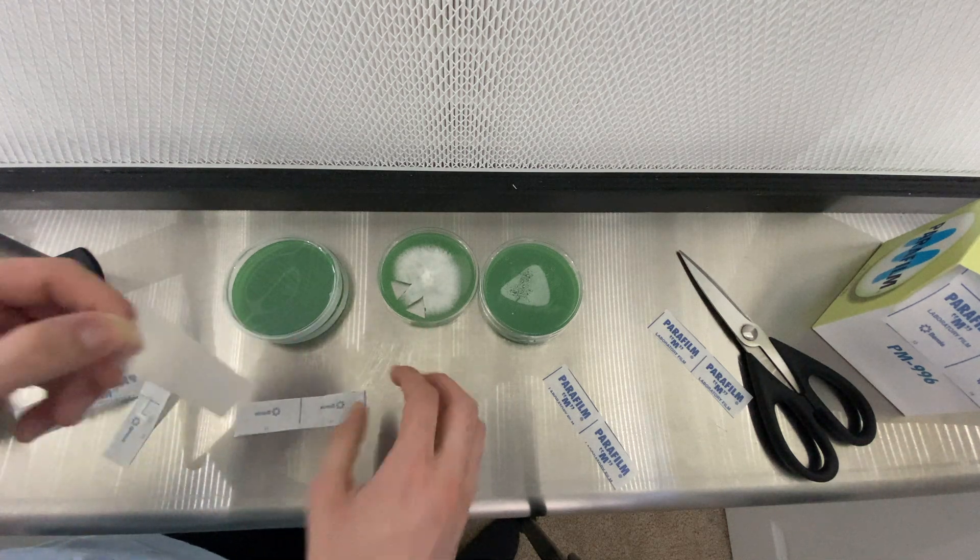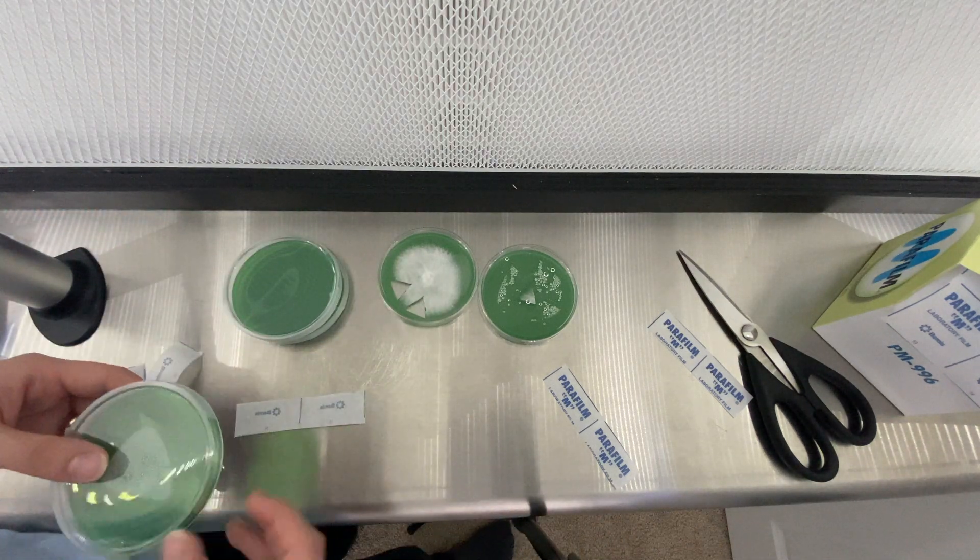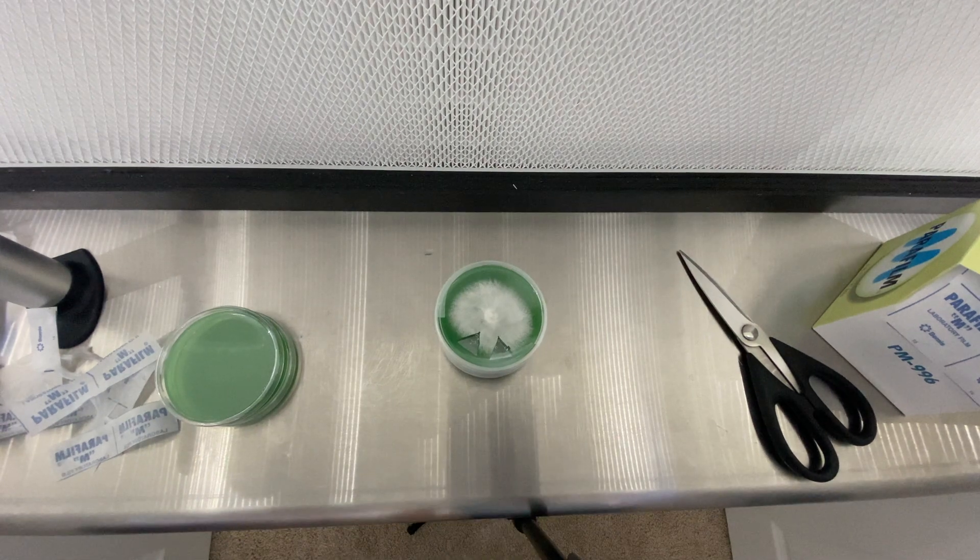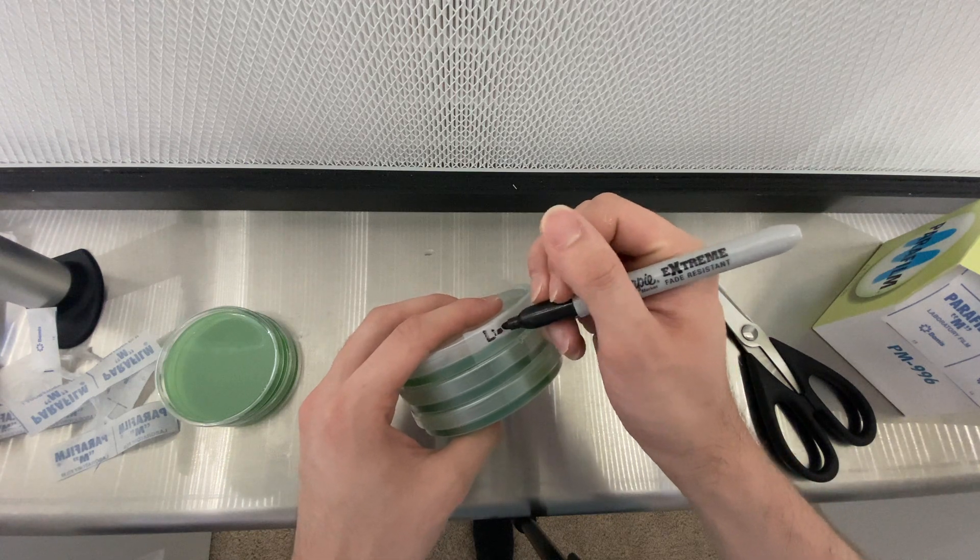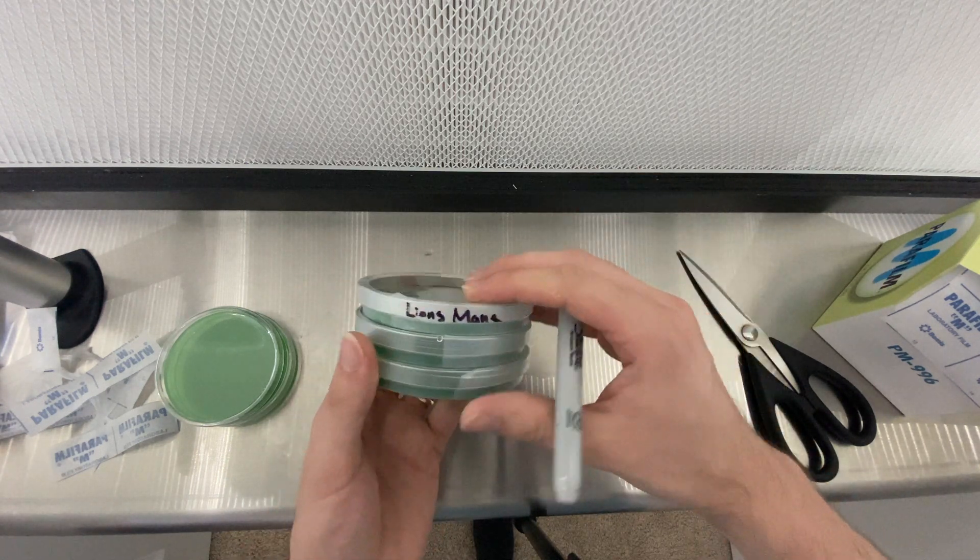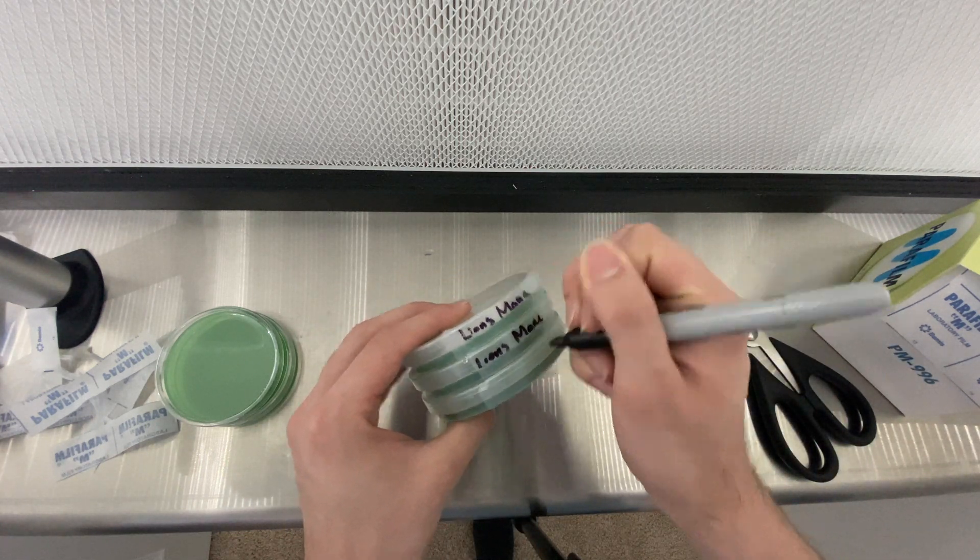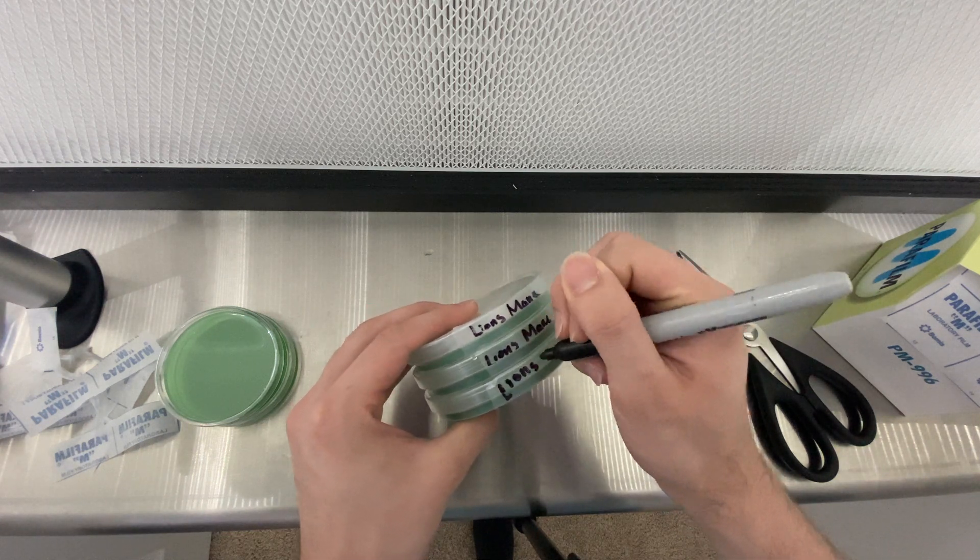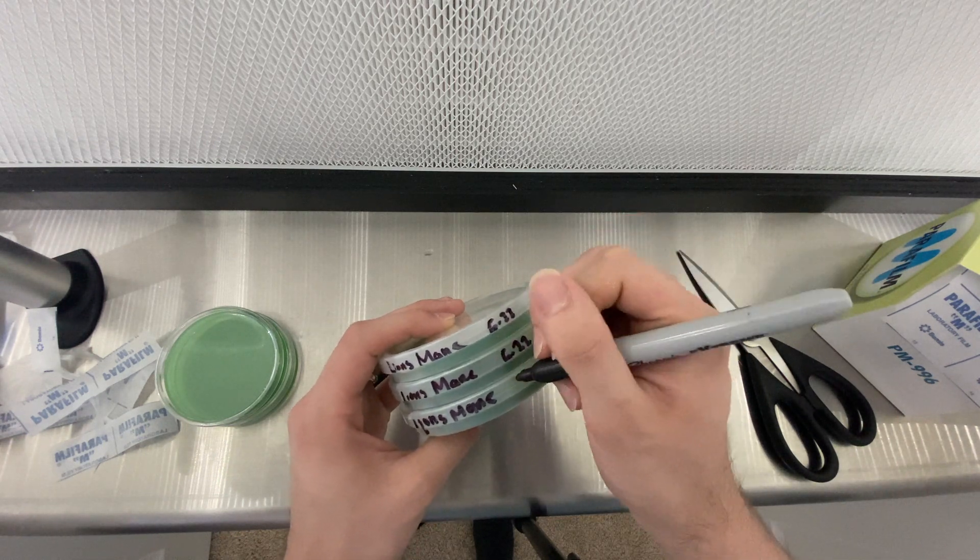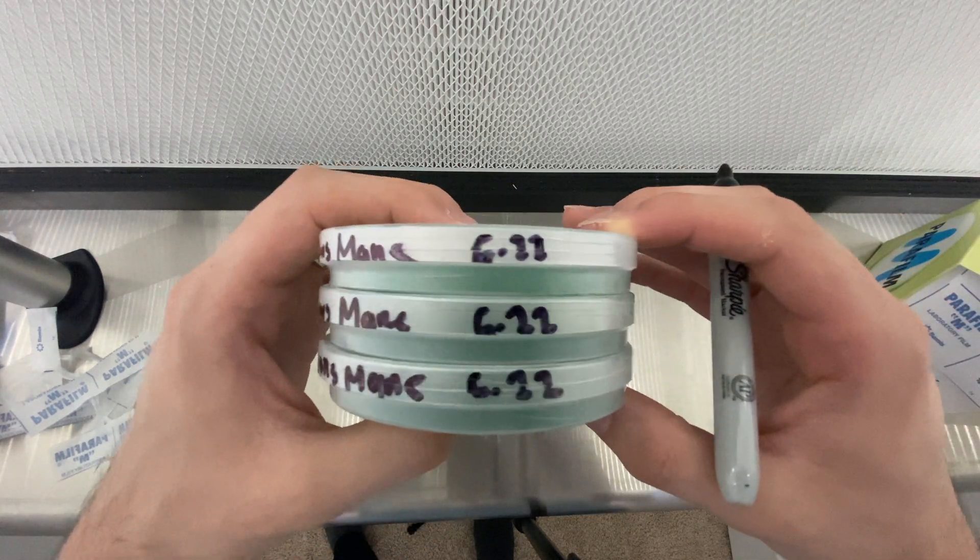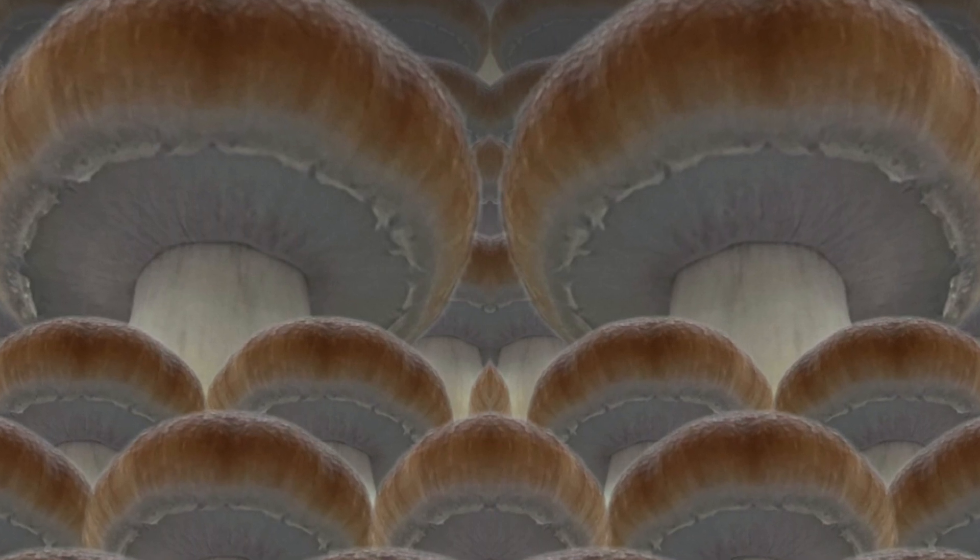Now the final thing we're going to do here is just to label our dishes as we've done in all our other videos. Again this is lion's mane culture so I'm going to label it as such and I'm going to write the date on it so I know when I did these transfers. But I thank you for joining me in another video where we're teaching you how to grow mushrooms. Feel free to follow me on my social media and follow me on Instagram. Any support will really be appreciated. Have a good one.